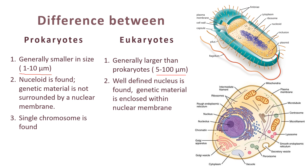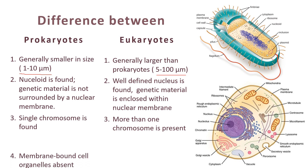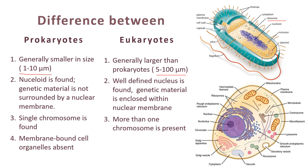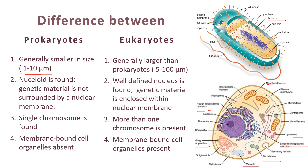Membrane-bound cell organelles are absent in prokaryotes — organelles like mitochondria, Golgi apparatus, chloroplast, and endoplasmic reticulum are not present. Only ribosomes are present here. In eukaryotes, membrane-bound cell organelles are present — mitochondria, lysosomes, smooth and rough endoplasmic reticulum, Golgi apparatus, vacuoles, and peroxisomes. All the membrane-bound organelles are present in eukaryotes, which are not found in prokaryotes.